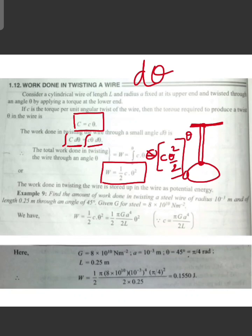The work done in twisting the wire is stored up in the wire as potential energy.